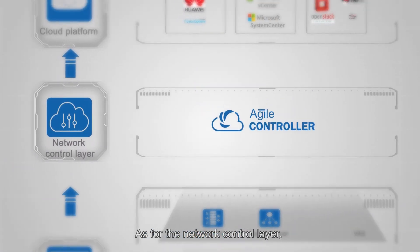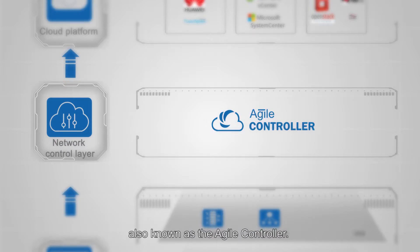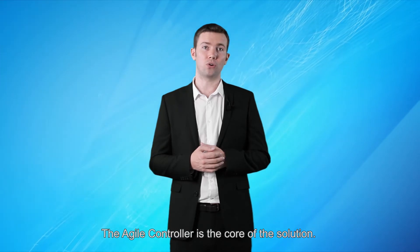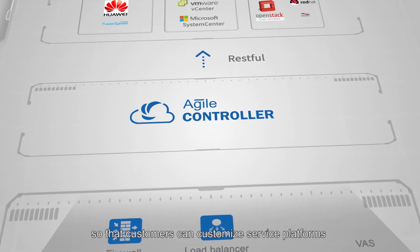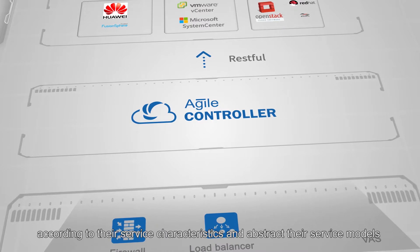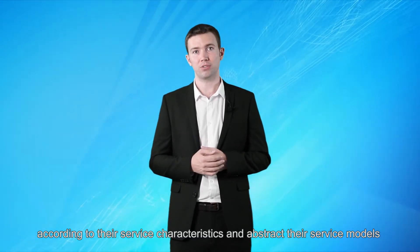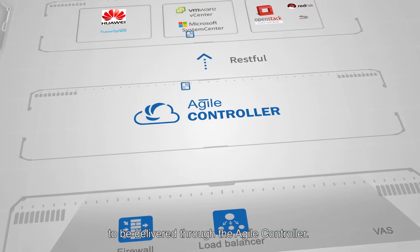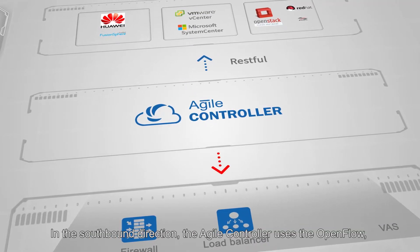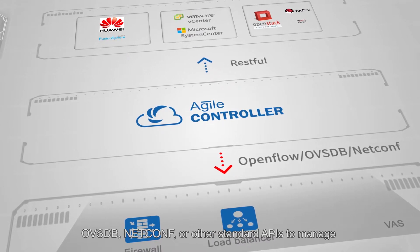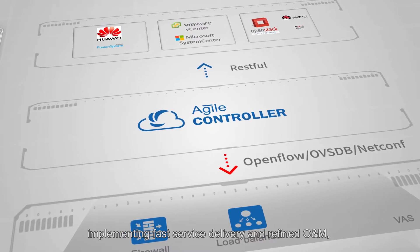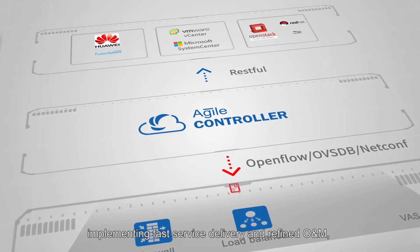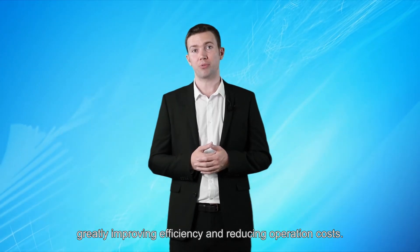As for the network control layer, it is implemented using Huawei's SDN controller, also known as the Agile controller. The Agile controller is the core of the solution. It connects to a cloud platform through the northbound RESTful APIs, so that customers can customize service platforms according to their service characteristics and abstract their service models to be delivered through the Agile controller. In the southbound direction, the Agile controller uses the OpenFlow, OVSDB, NetConf, or other standard APIs to manage and configure network resources, implementing fast service delivery and refined O&M, greatly improving efficiency, and reducing operation costs.